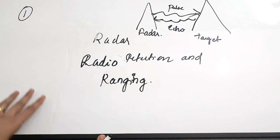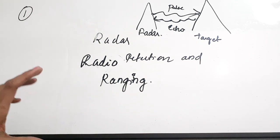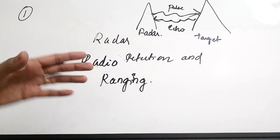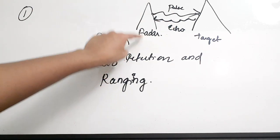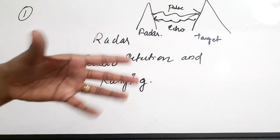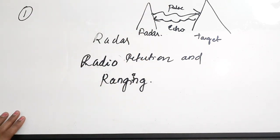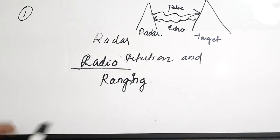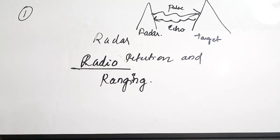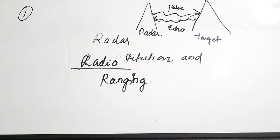By calculating the time difference between the two signals, the radar finds the location of the target. This is the basic working principle of a radar. Generally we say the radar works on the principle of radio wave reflection — the waves are sent, they hit the target, an echo comes back, and this echo is used to find the location of the target.